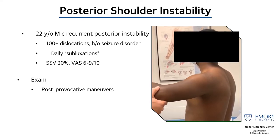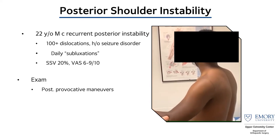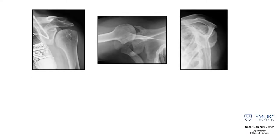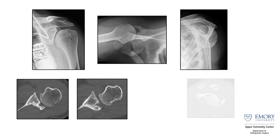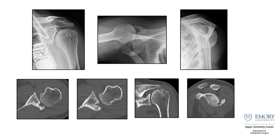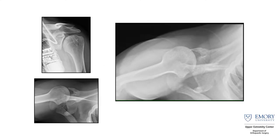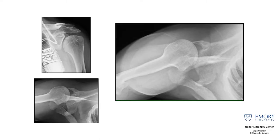His shoulder function is obviously very limited. On static X-rays, you can see the AP — the Grashey looks pretty normal, the scapular Y looks pretty normal. There is some posterior de-centering on the axillary view, and you can also see some posterior de-centering on the CT scan. But I think when you see the DDR, you can really get an understanding of what's going on.